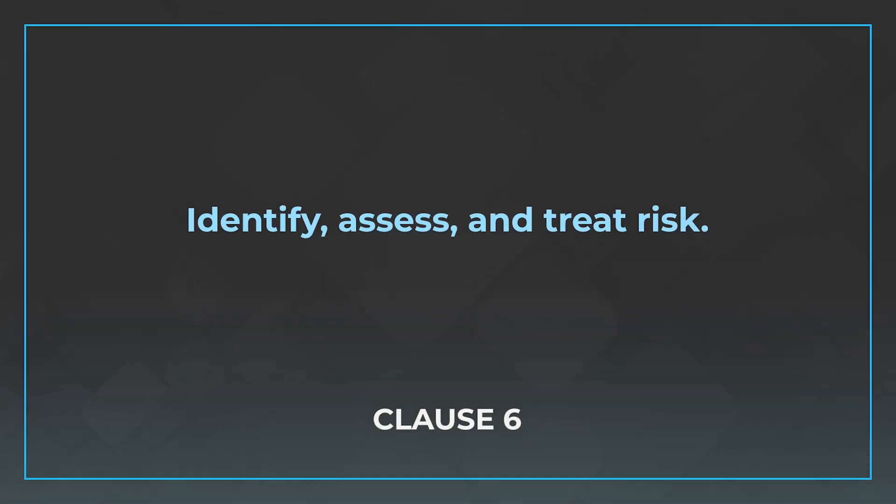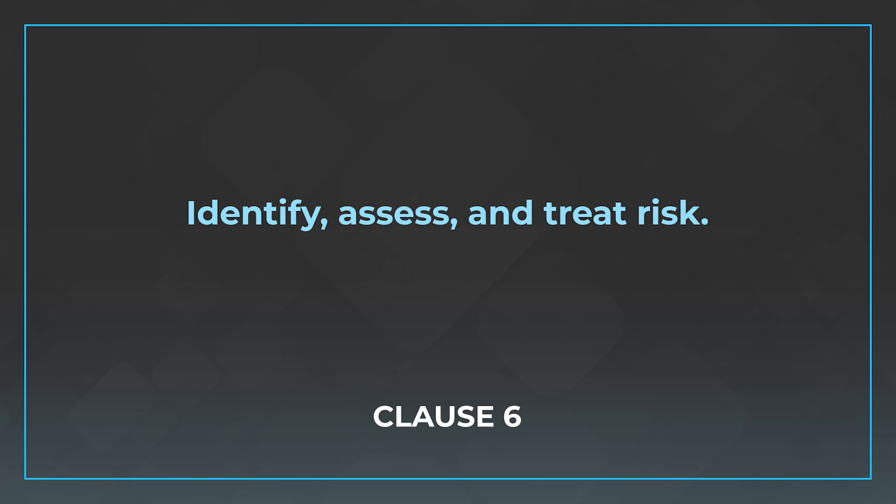Clause 6 is a big one. It's ultimately around the risk assessment process as well as the setting of objectives and planning to achieve them. In Clause 6 you're going to want to identify, assess, and treat risk — a process you're familiar with if you've been certified against other standards such as ISO 27001. There is an additional requirement though for an AI impact assessment, and I want to pause on that one because it's kind of new for those who may have been certified historically against other standards.